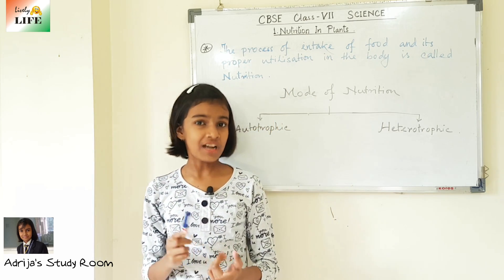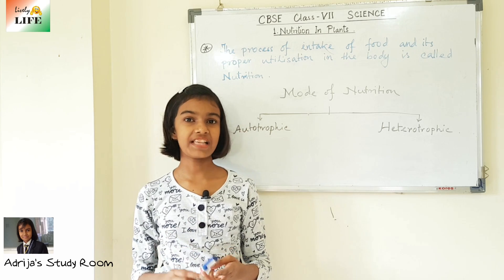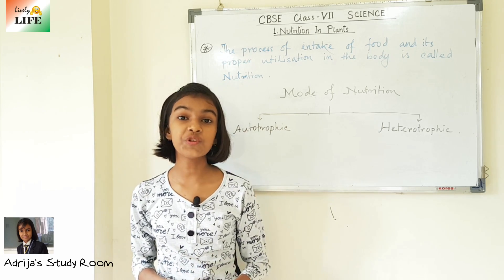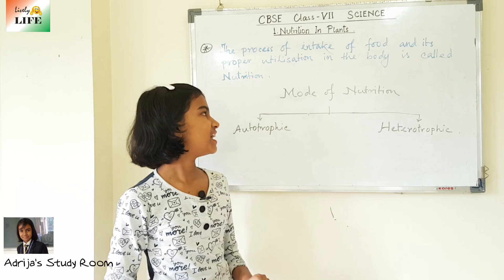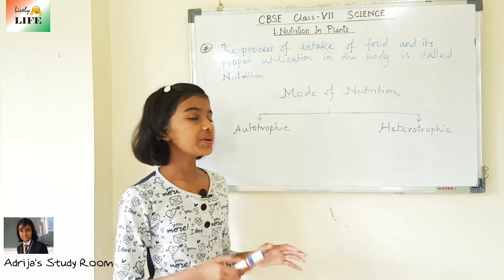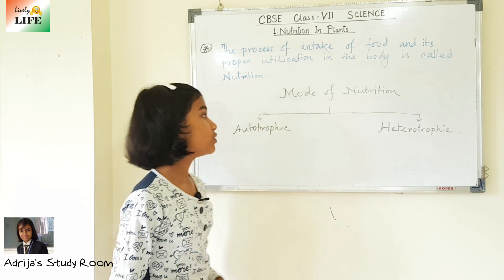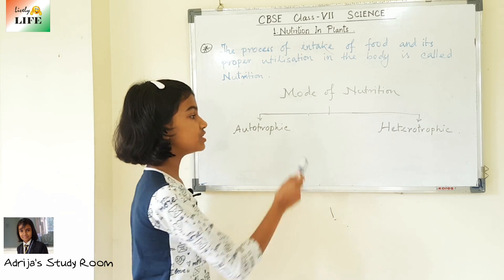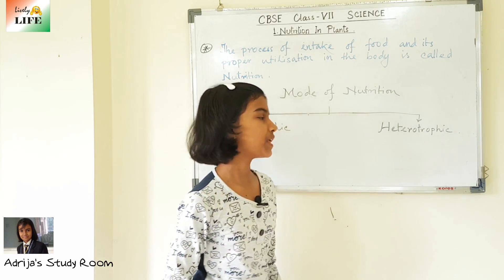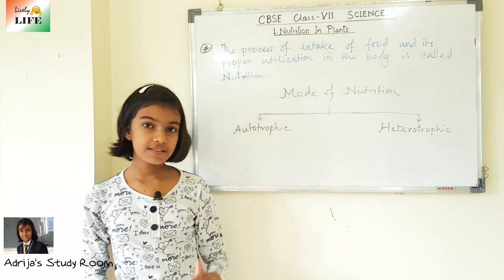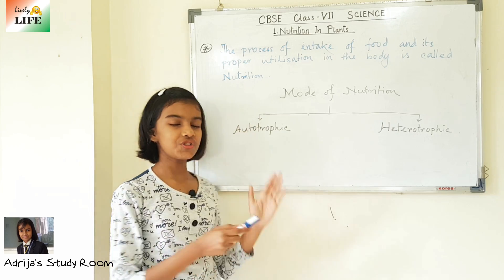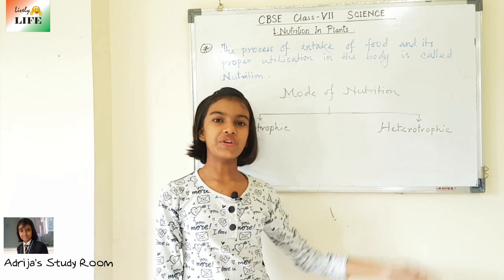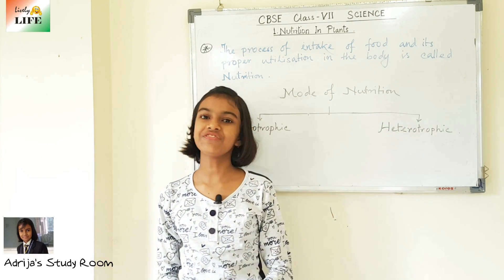We all know the words carbohydrates, proteins, fats, vitamins, minerals. These are the components of food known as nutrients. In this chapter, we are going to learn about two modes of nutrition: autotrophic mode and heterotrophic mode. In this video, we are going to learn about autotrophic mode in detail. In the next video, we are going to talk about heterotrophic mode of nutrition.